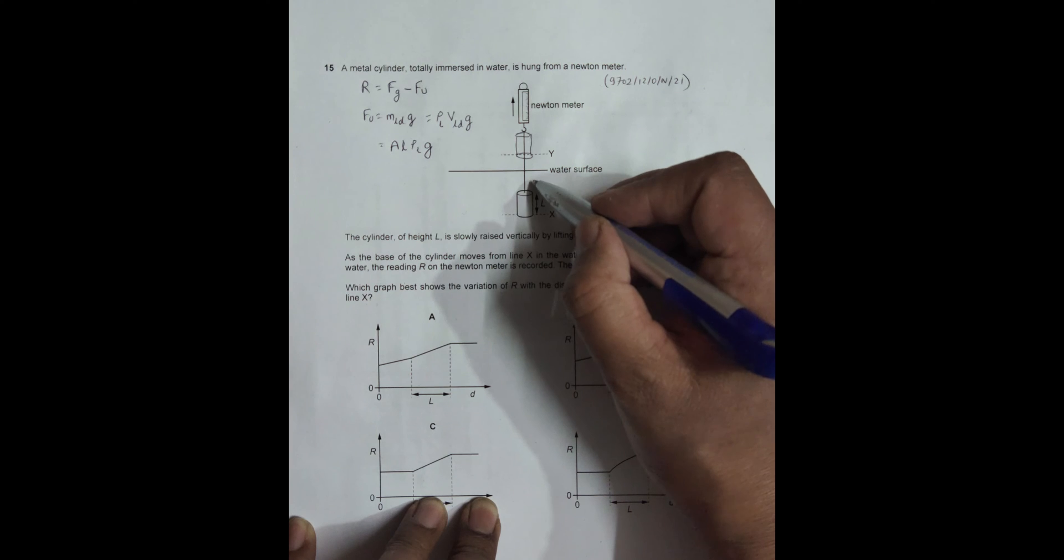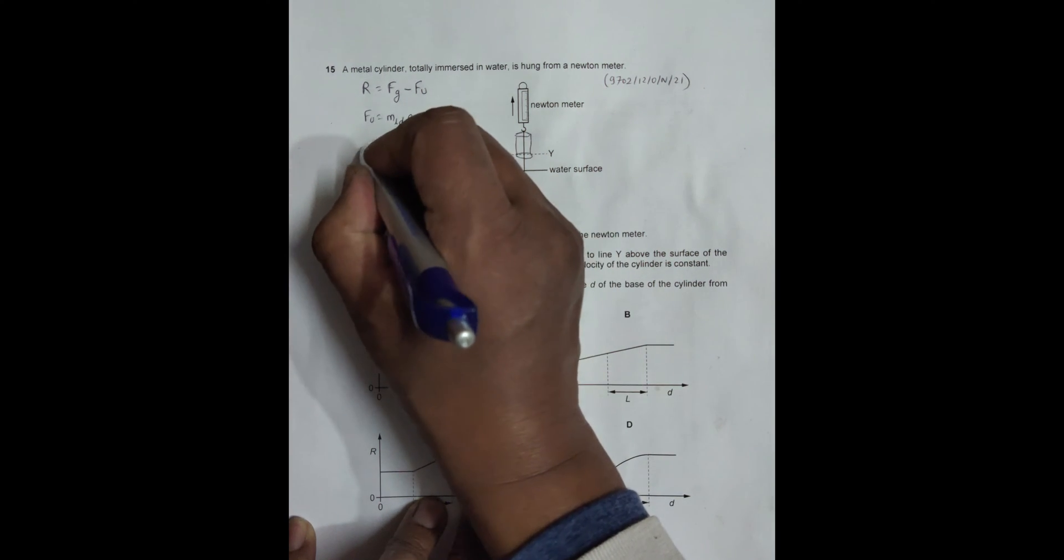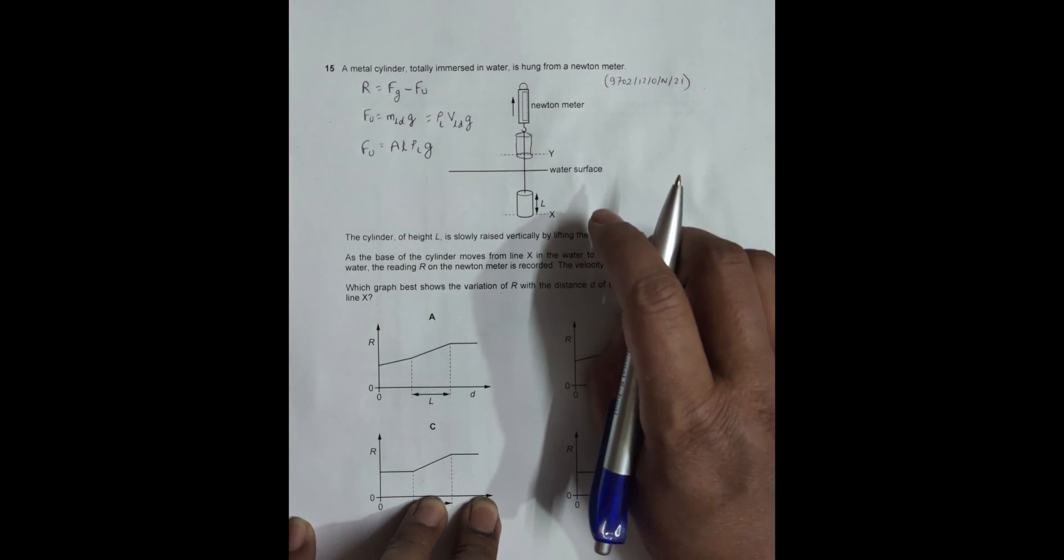When this thing starts to emerge, then we don't have full L here, so at that time we'll have to make it as X. But for now, for the time being it is like this.